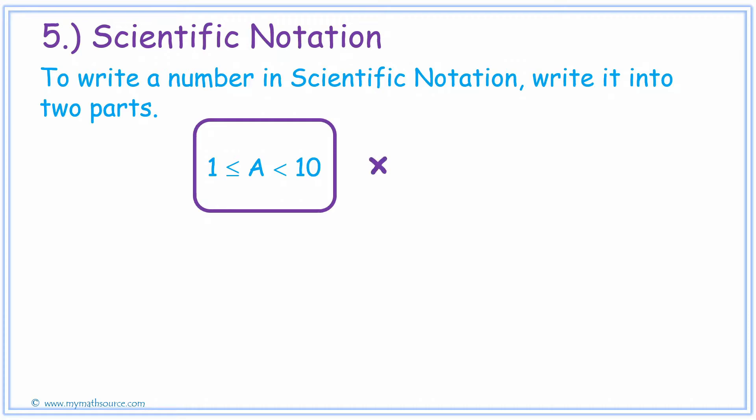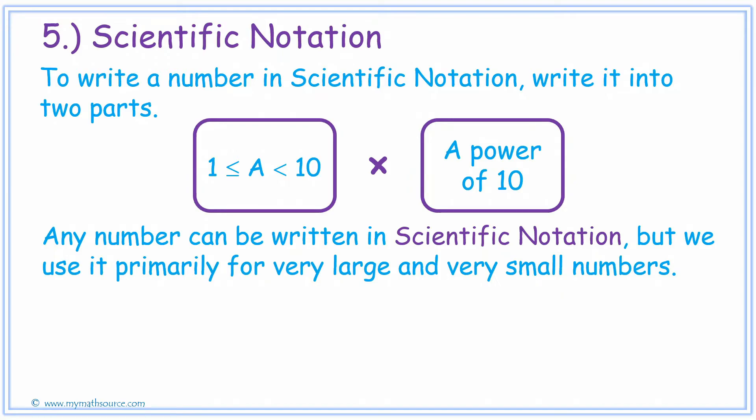The second part of it is that we will multiply it by a base 10, or rather a power of 10. Now, any number can be written in scientific notation, but we use it primarily for very large and very small numbers.